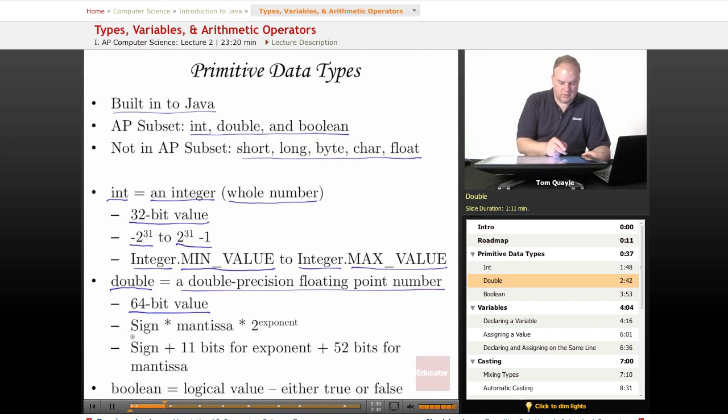The double precision number is stored as a sign times a mantissa times two to some exponent. There's one bit for the sign. Zero indicates positive and one indicates negative. Then there's 11 bits for the exponent and 52 bits for the mantissa, giving us a total of 64 bits.